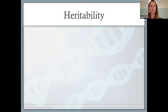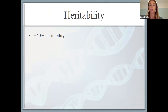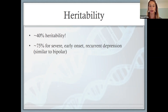In terms of the heritability of depression, it's got about a 40% heritability estimate — meaning 40% of the variance in who gets depressed is accounted for by genetics. Comparatively, bipolar disorder and schizophrenia are around 80% heritability, so they are much more genetically linked than depression. That said, if you have severe, early onset, and recurrent depression, then the heritability estimate is around 75%, more similar to those other more genetically linked disorders.